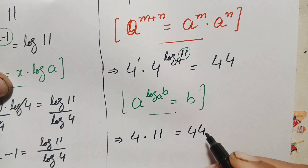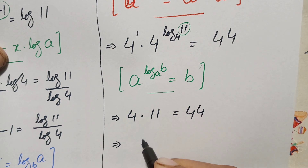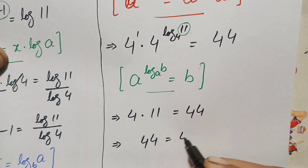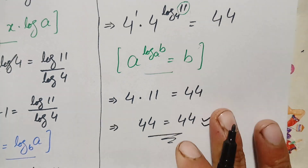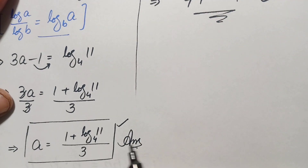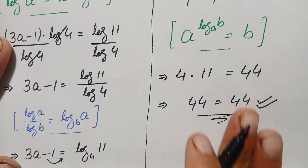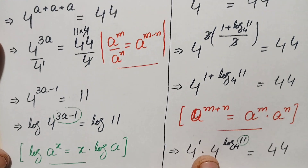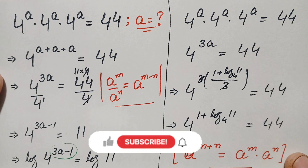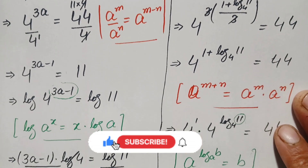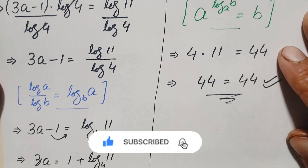4 times 11 equals 44, and 44 equals 44. Both sides are equal, confirming that a equals (1 + log₄(11)) / 3 is the exact and correct value of a in this exponential math problem. If you liked this video, don't forget to subscribe to my YouTube channel for more step-by-step math solutions. Thanks for watching!